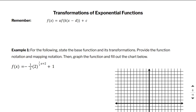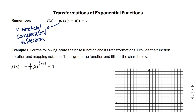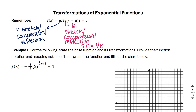Hey everyone. This video is on transformations of exponential functions. Just a reminder that this is the general equation of transformations. A represents a vertical stretch, compression, flip, or reflection. K represents a horizontal stretch, compression, or reflection. The scale factor is 1 over K, and K must be factored out. D represents the horizontal translation, and C represents the vertical translation.